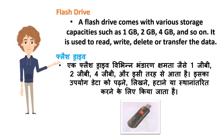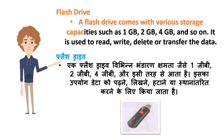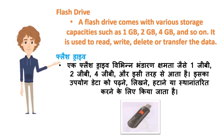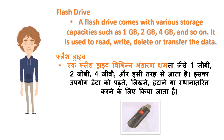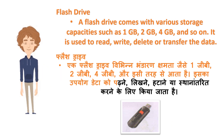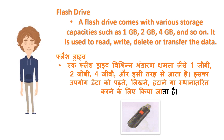Flash Drive: A flash drive comes with various storage capacities such as 1GB, 2GB, 4GB and so on. It is used to read, write, delete or transfer data. Ek flash drive vibhinn bhandaran kshamta jaise 1GB, 2GB, 4GB aur isi tarah se aata hai. Iska upyog data ko padhne, likhne, hatane ya sthanantarit karne ke liye kiya jata hai.